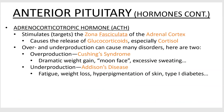Adrenocorticotropic hormone, or ACTH, stimulates a region of the adrenal gland — specifically the cortex, called the zona fasciculata. As a result, it causes the release of glucocorticoids, especially cortisol, which help control blood sugar levels, as will be detailed in a later video.